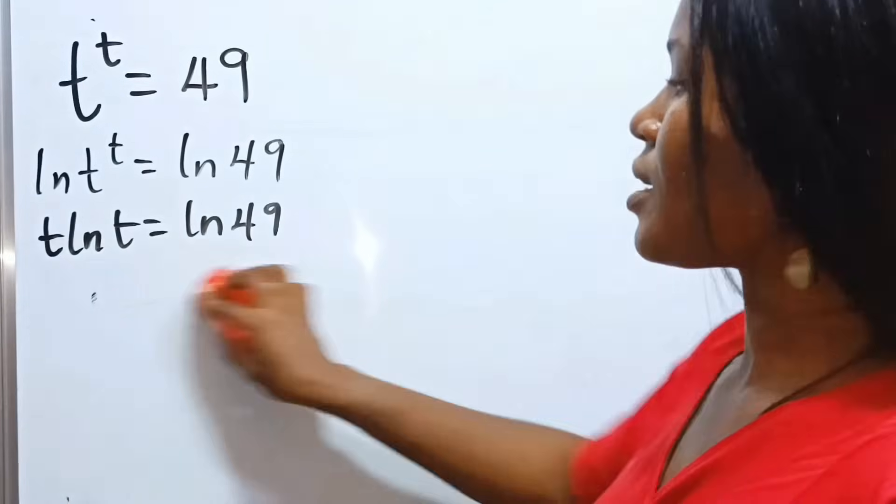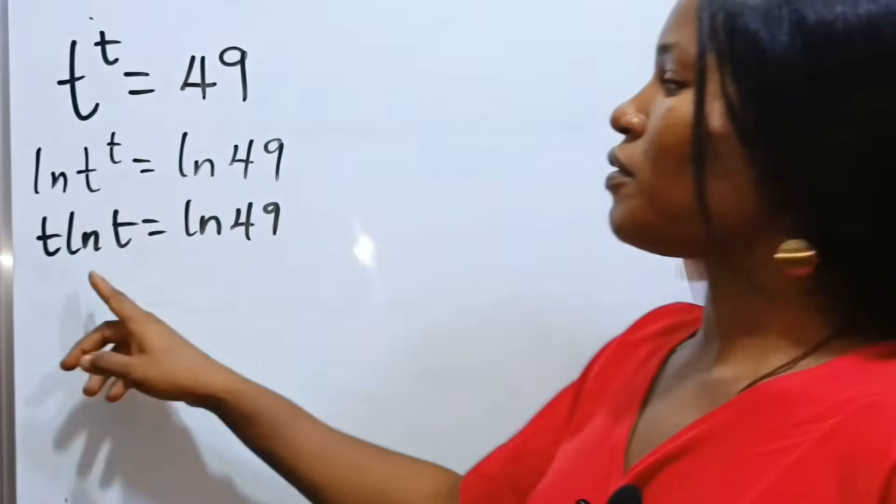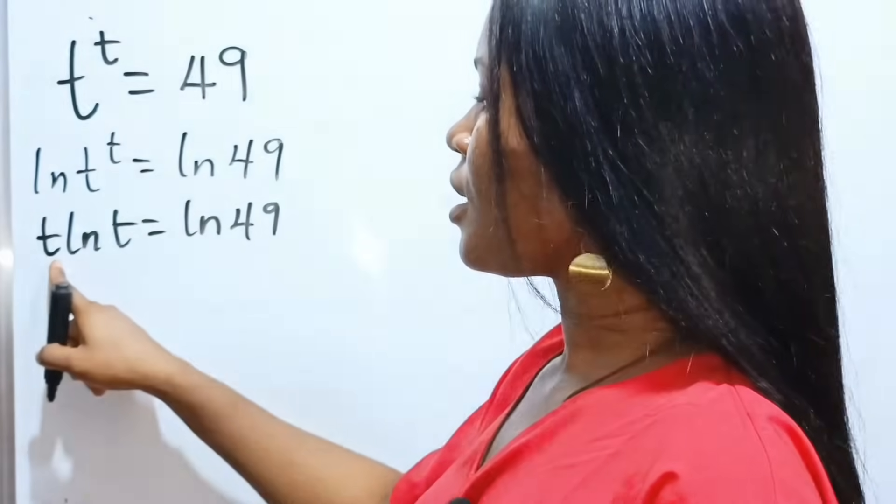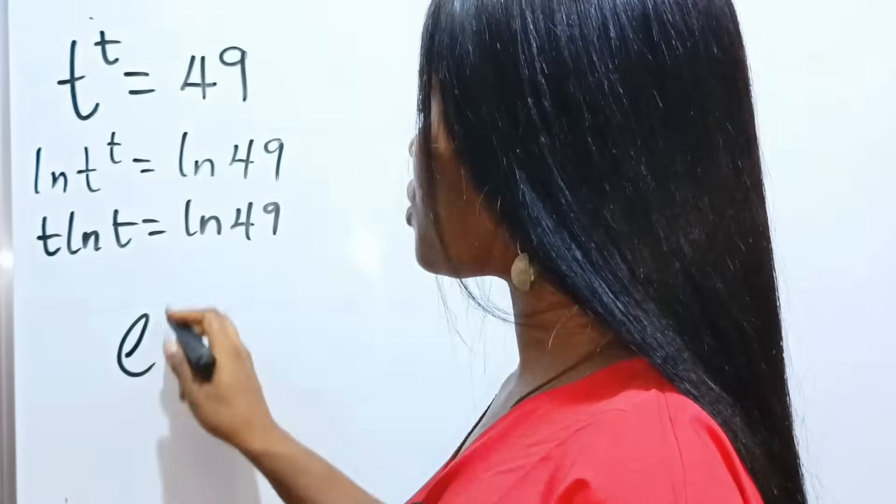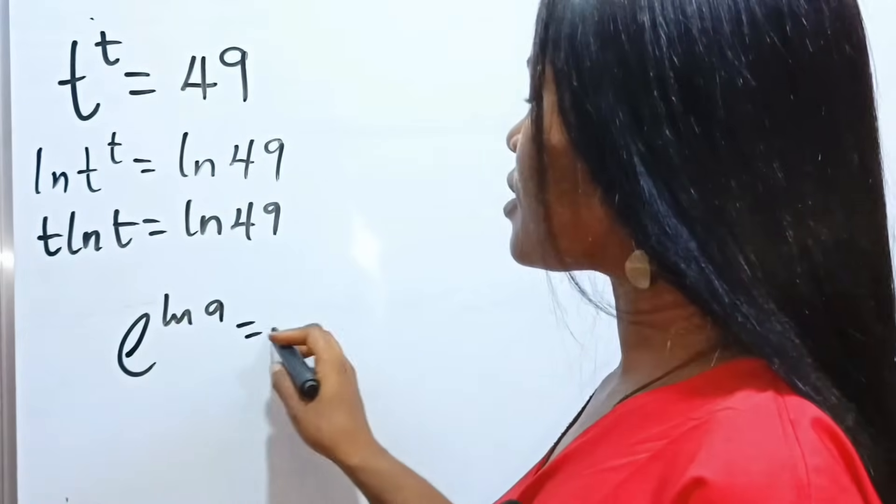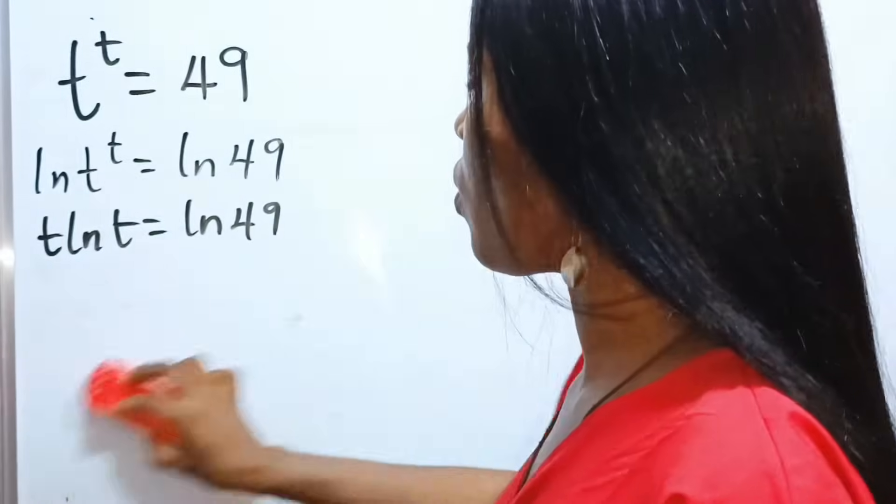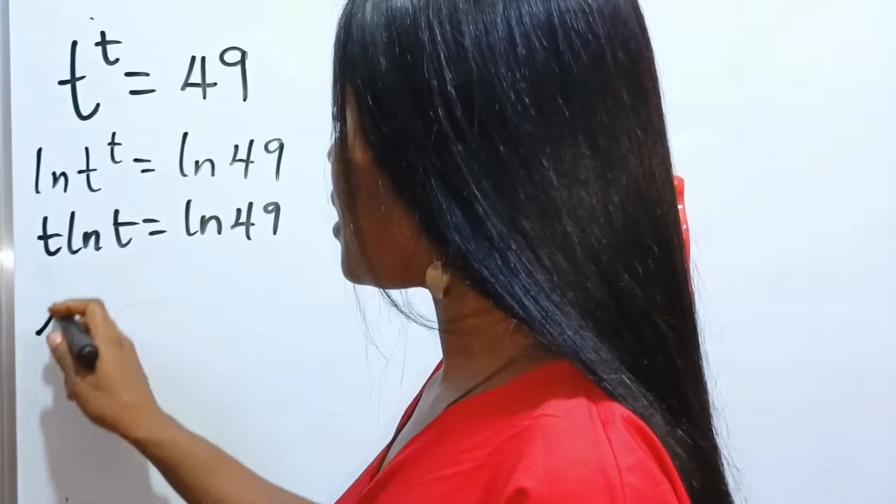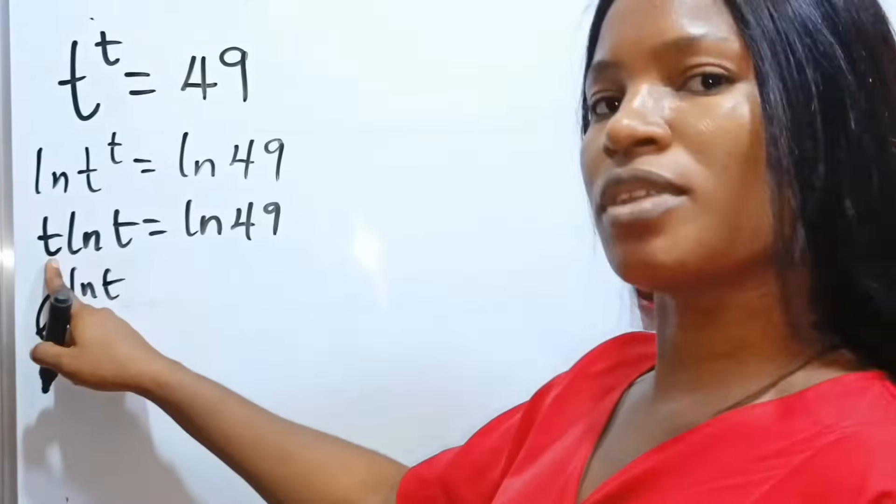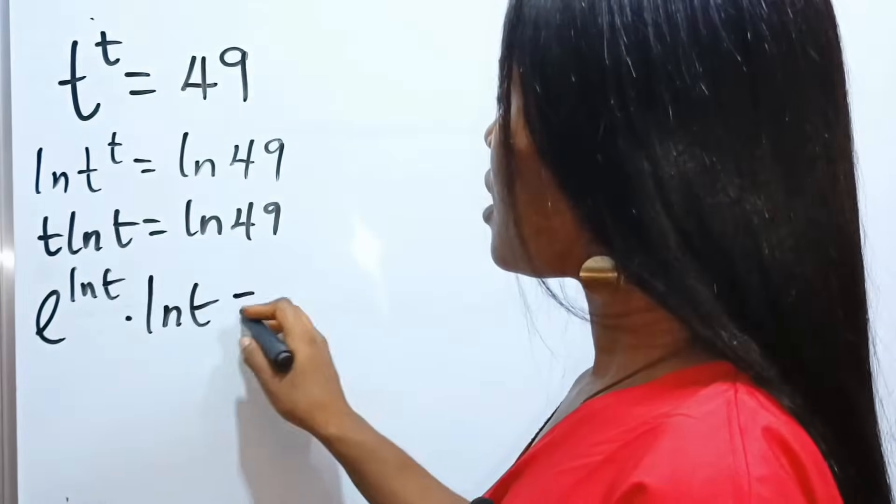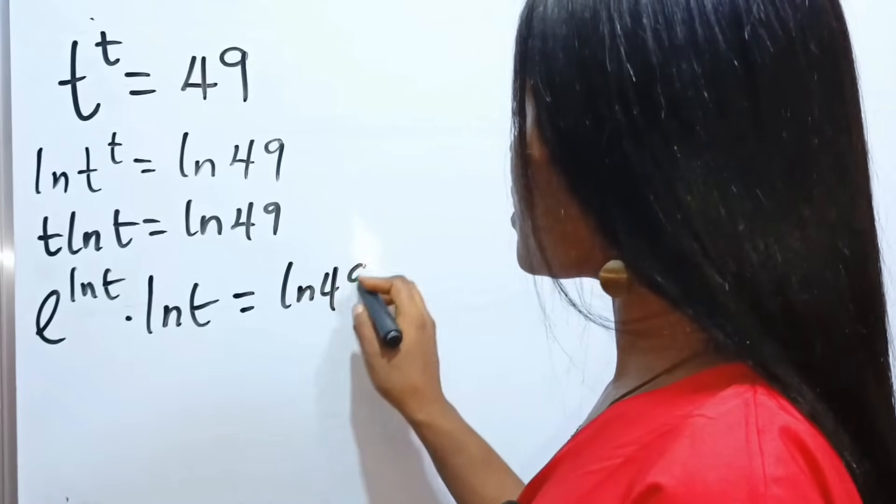So, how do we do that? I always tell my students, leave this one alone. This one with ln, leave it alone. So, this t can be written as, remember that e to the power of ln a is equal to a. So, we are going to write e to the power of ln t, which will stand for this t, multiply by ln t, this ln t, is equal to ln 49.